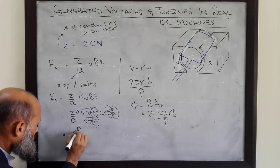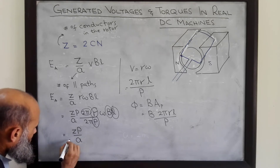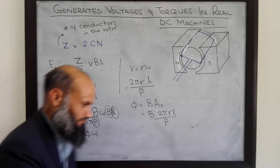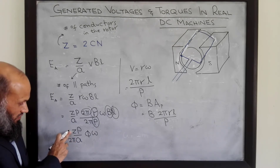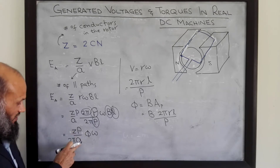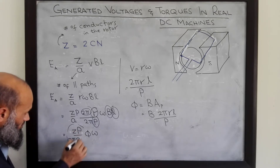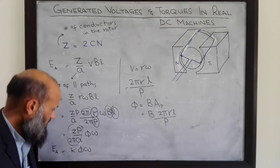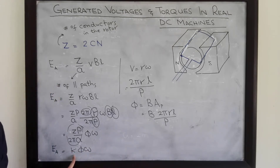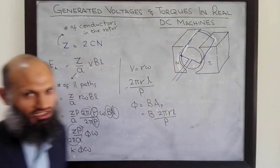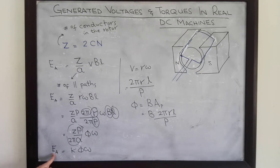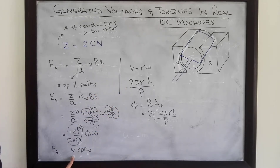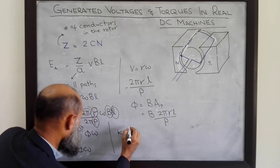This gives EA = (ZP)/(2πA) × φ × ω. Once the machine is designed, the number of conductors Z, number of poles P, and number of parallel paths A are all fixed. Therefore EA = K·φ·ω, where the constant K = ZP/(2πA) depends on the construction of the machine. This expression is quite similar to the one derived for a single turn — the generated voltage depends upon the total flux, the speed of rotation, and a constant.